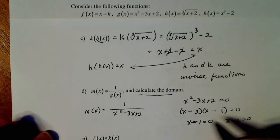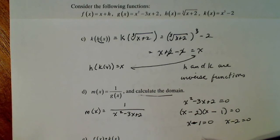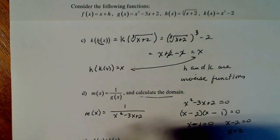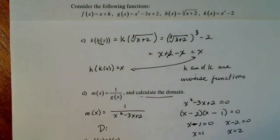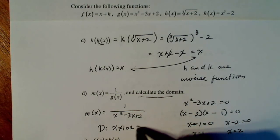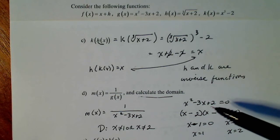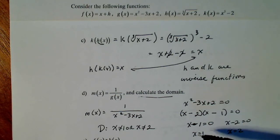Solving these, I get X equals 1 and X equals 2. To write the domain strictly, X can't be 1 and X can't be 2. Remember, these are the values that make the denominator zero, so I must exclude them from the domain.